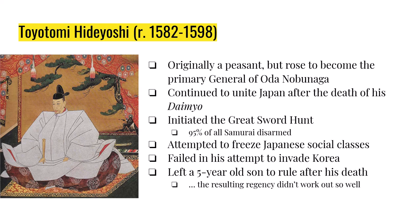Following the Great Sword Hunt, Hideyoshi attempts to freeze the social classes — he prohibits samurai from quitting the service of their lords, and samurai essentially become government officials and pencil pushers. In 1592, Hideyoshi invades Korea but doesn't win; he is defeated and his reputation is damaged forever. Also around this time, Hideyoshi dies, leaving a young son named Hideyori who was supposed to become the new Shogun but was only four or five years old.